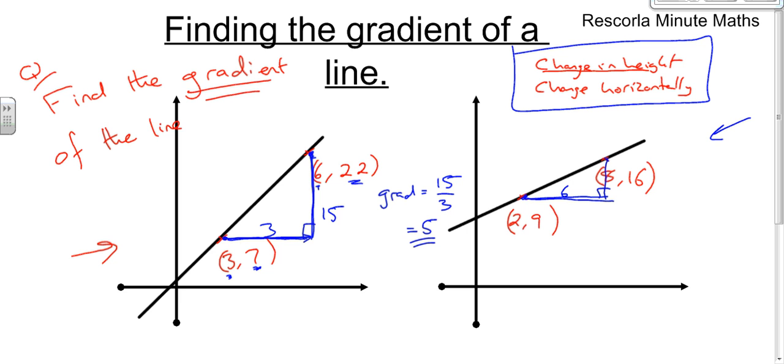So going across there, we've got a difference of 6. And this one here is 9 up. This one here is 16 up. So if we've gone from 9 up to 16 up, we've gone up by 7. So now the gradient is the change in height, which is 7, divided by the change horizontally, which is 6. And we just leave it like this. It's not a pleasant number, but we just leave it like that.